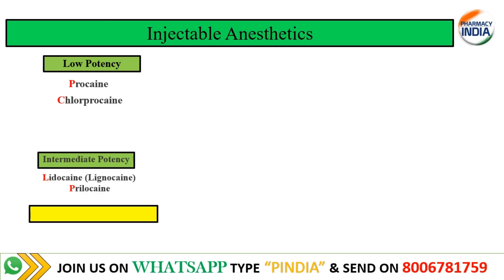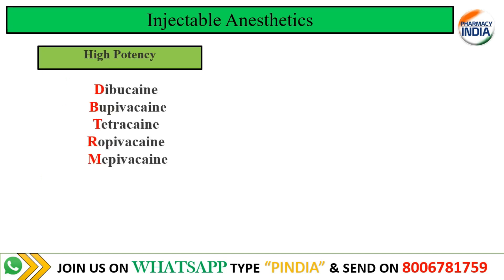First, we have low potency injectable anesthetics. In this class, we have procaine and chloroprocaine. Then, intermediate potency injectable anesthetics include lidocaine and prilocaine. We can remember this with the mnemonic 'pril lid' — 'pril' means prilocaine and 'lid' means lidocaine.